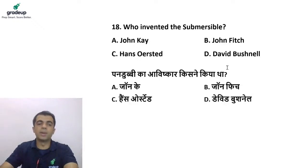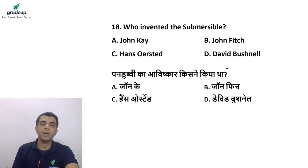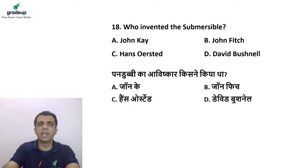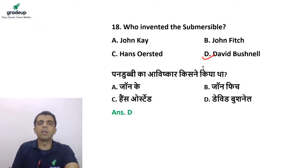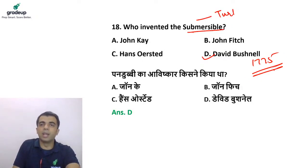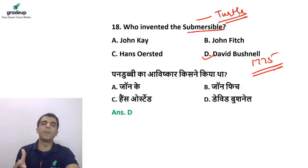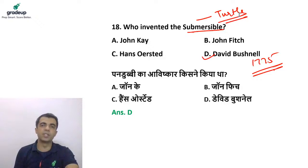Next question: who invented the submersible? Options are John K., John Fitch, Hans Oersted, and David Bushnell. The first submersible — a prototype of the submarine — was invented by David Bushnell in 1775. It was named 'Turtle,' used for combat, and had explosives attached to it.